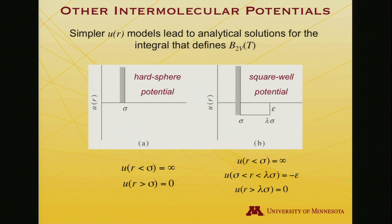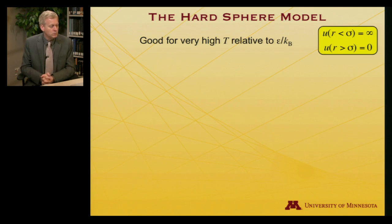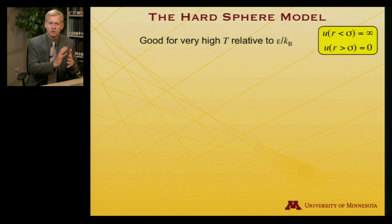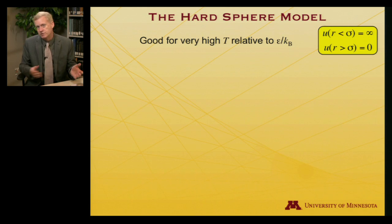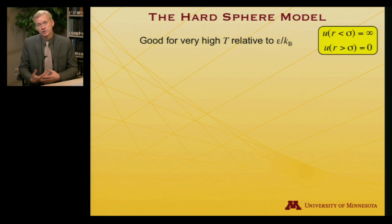Let's see how those potentials behave when we plug them into the integral expression for the second virial coefficient. Starting with the hard sphere model — when might this be a good potential to describe gas molecule interactions? You would expect it to be relatively good at very high temperatures, where molecules are moving with a lot of speed and don't need to feel an attraction to be drawn close. Instead they just keep going until they slam into one another and bounce off, behaving kind of like billiard balls moving with a lot of kinetic energy.